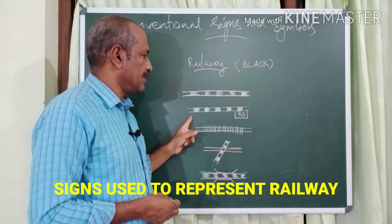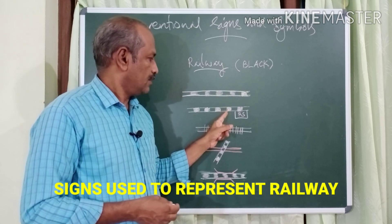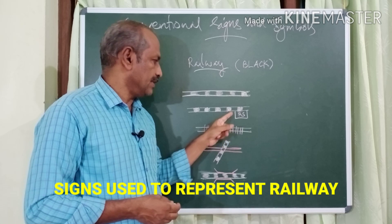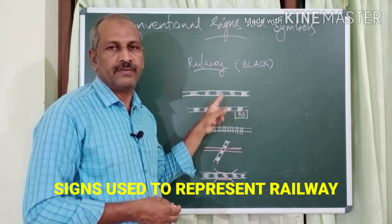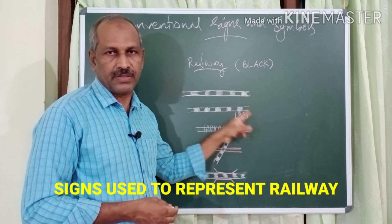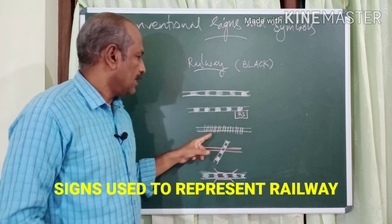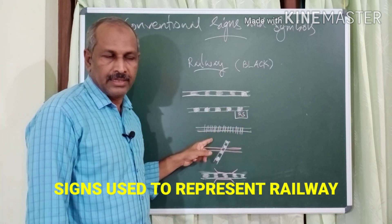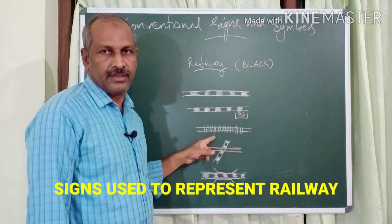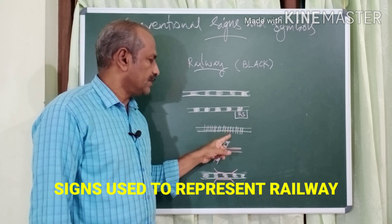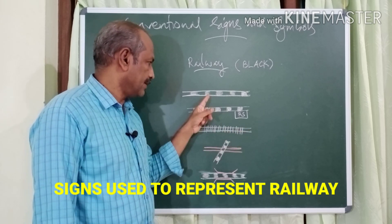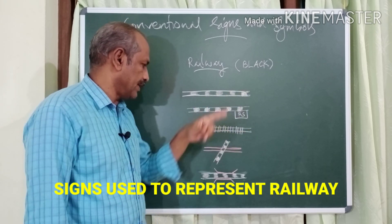The second symbol is also in black color, but here a rectangle with 'RS' written inside represents a railway with a station. The third symbol in black represents a railway meter gauge track. So we have railway broad gauge and railway meter gauge, both in black color.